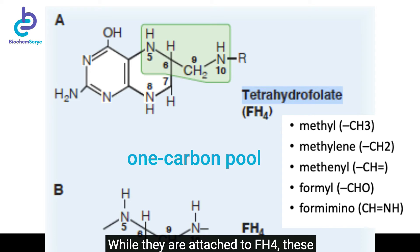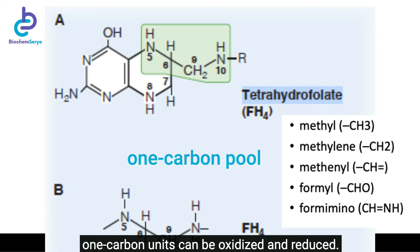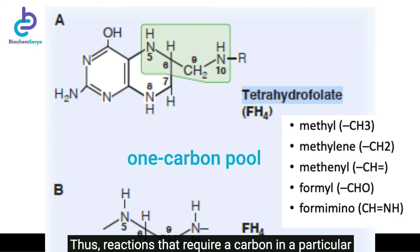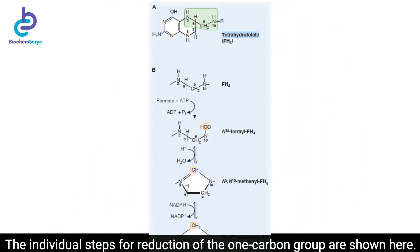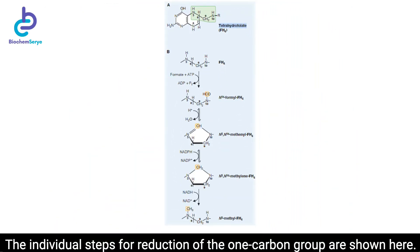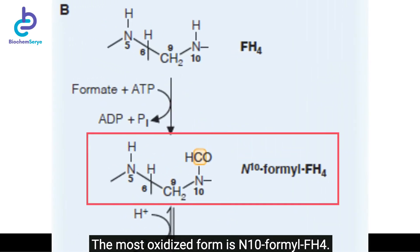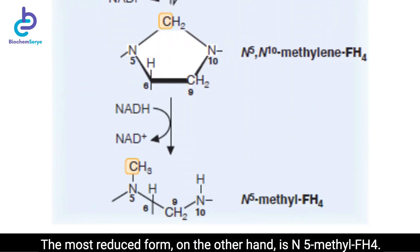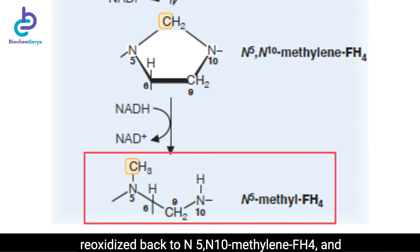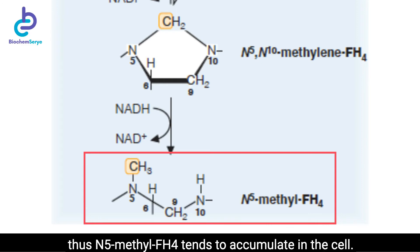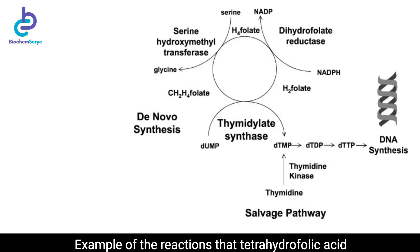The collection of one-carbon groups attached to FH4 is known as the one-carbon pool. While attached to FH4, these one-carbon units can be oxidized and reduced. Thus, reactions that require a carbon in a particular oxidation state may use carbon from the one-carbon pool that was donated in a different oxidation state. The individual steps for reduction of the one-carbon group are shown here. The most oxidized form is N10-formyl FH4. The most reduced form is N5-methyl FH4. Once the methyl group is formed, it is not readily re-oxidized back to N5,N10-methylene FH4, and thus N5-methyl FH4 tends to accumulate in the cell.